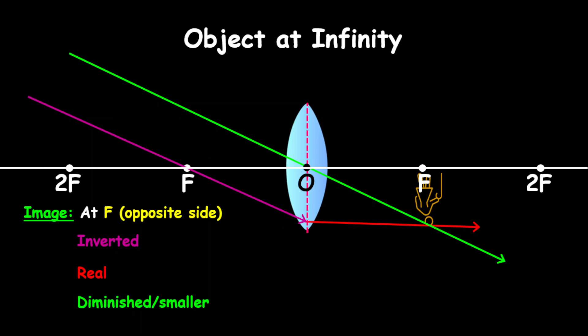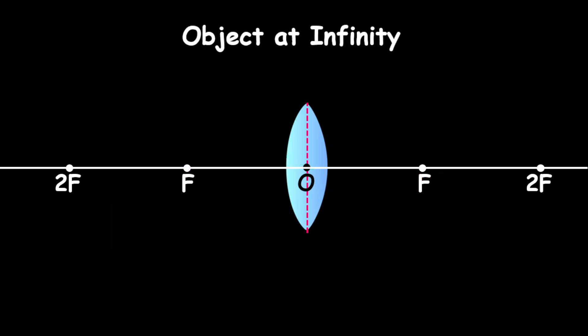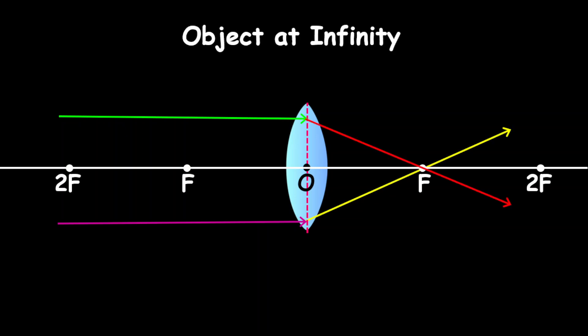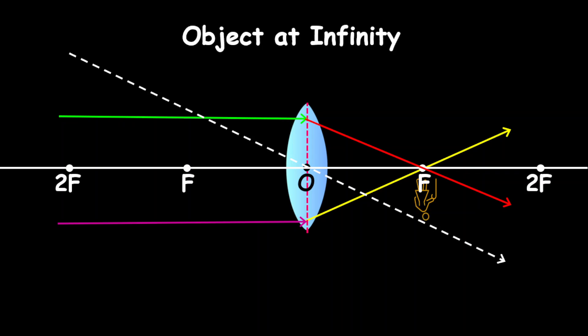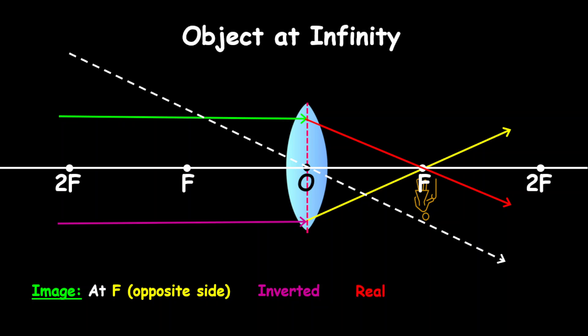There's another option to draw this same ray diagram for the object at infinity. Here we have two parallel lines coming along the principal axis. Since they are parallel rays, they will refract and pass through F — one going through F, the other going through F — and they meet at F. We can also add the undeviated ray through the optical center. Our image forms right at F: on the opposite side, inverted, real, and definitely smaller than the object itself.